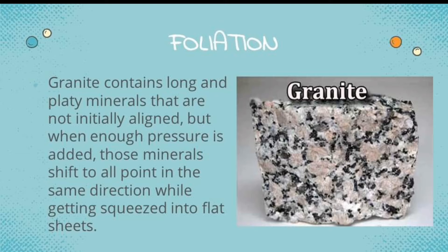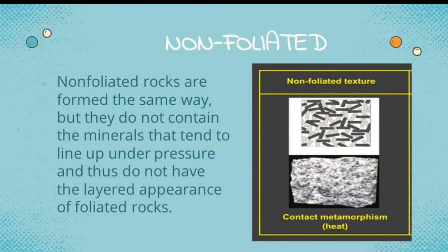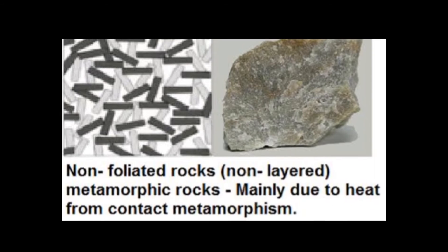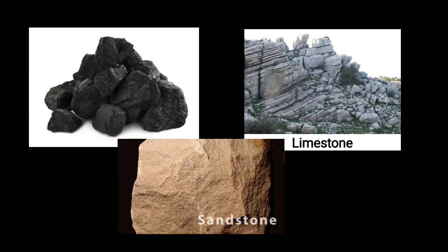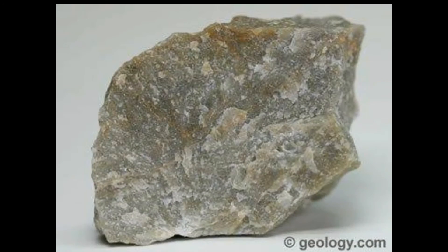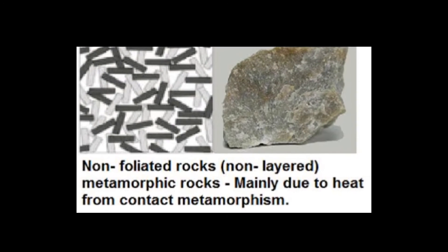Granite contains long and platy minerals that are not initially aligned, but when enough pressure is added, those minerals shift to all point in the same direction while getting squeezed into flat sheets. When granite undergoes this process at a tectonic plate boundary, it turns into gneiss. Non-foliated rocks are formed the same way but do not contain the minerals that tend to line up under pressure, and thus do not have the layered appearance of foliated rocks. Sedimentary rocks like bituminous coal, limestone, and sandstone, given enough heat and pressure, can turn into non-foliated metamorphic rocks like anthracite coal, marble, and quartzite.